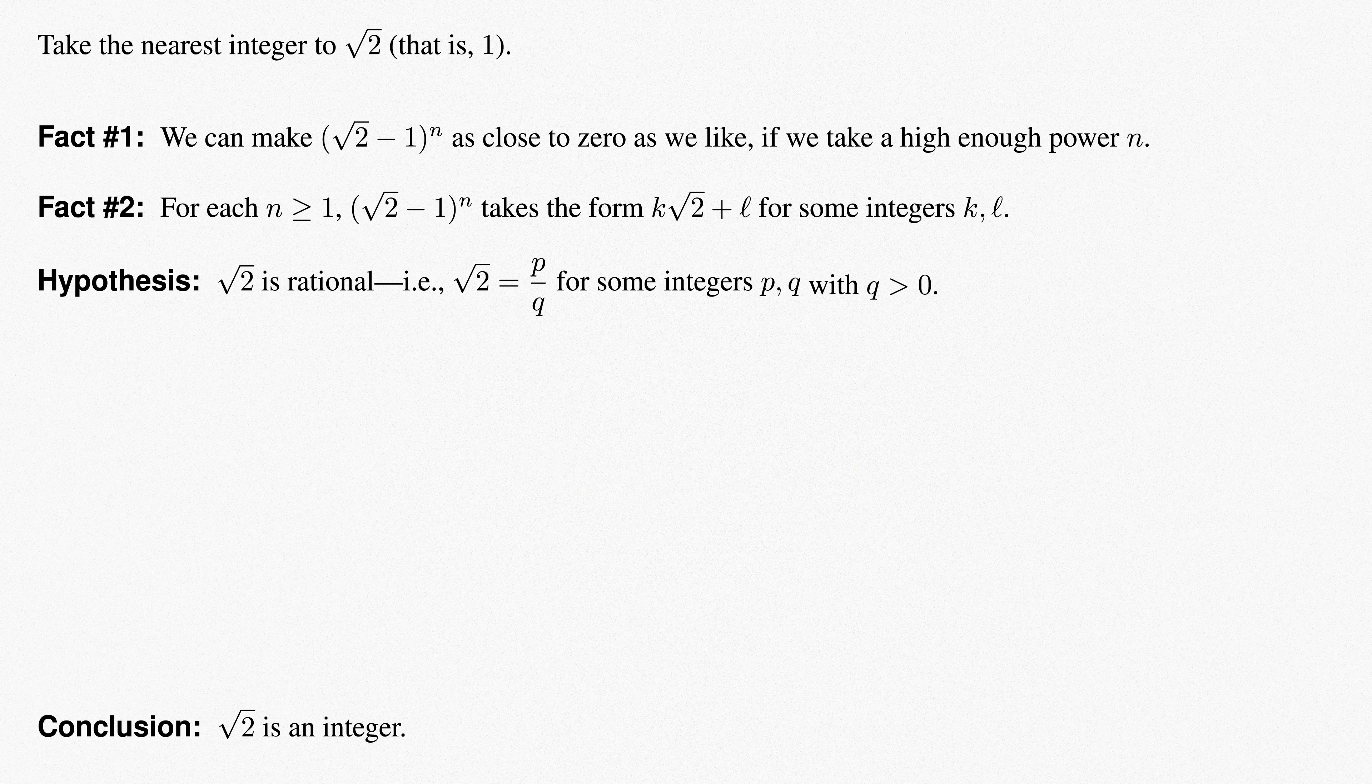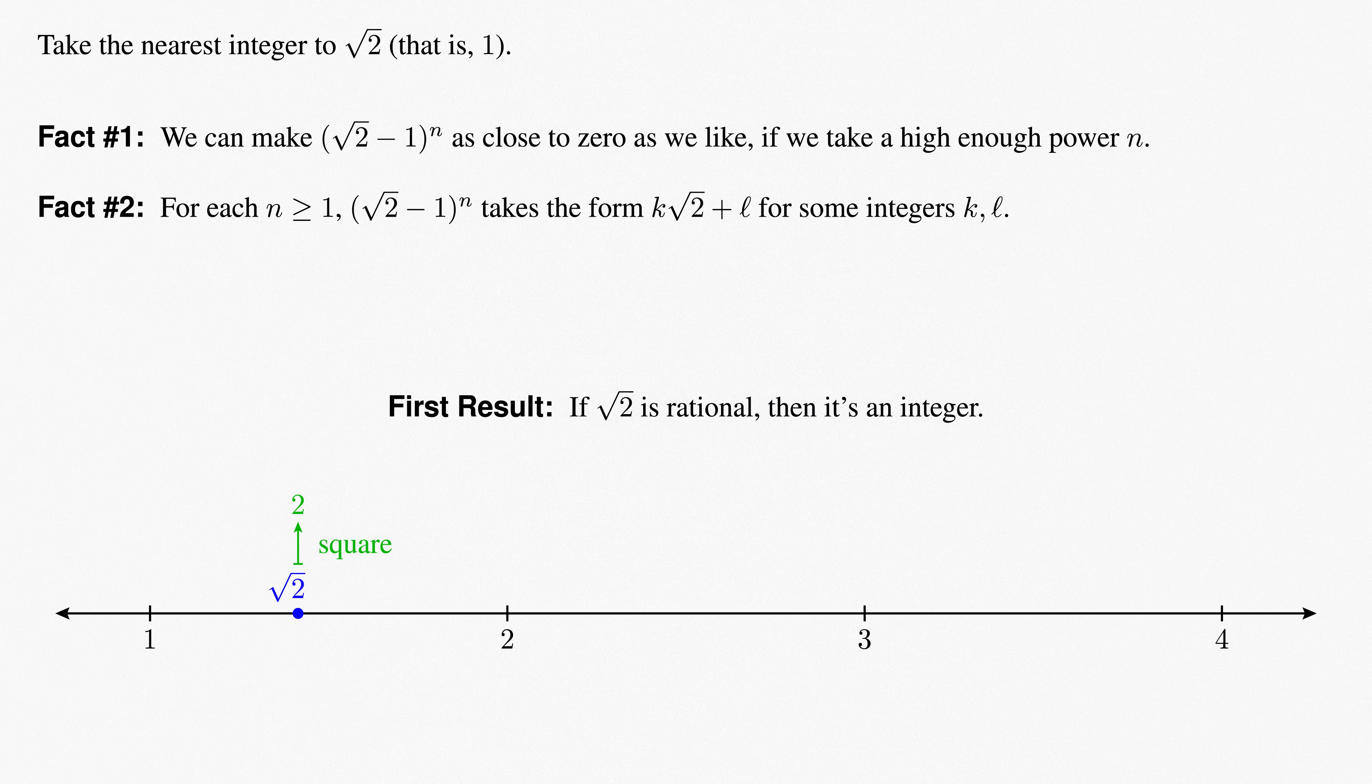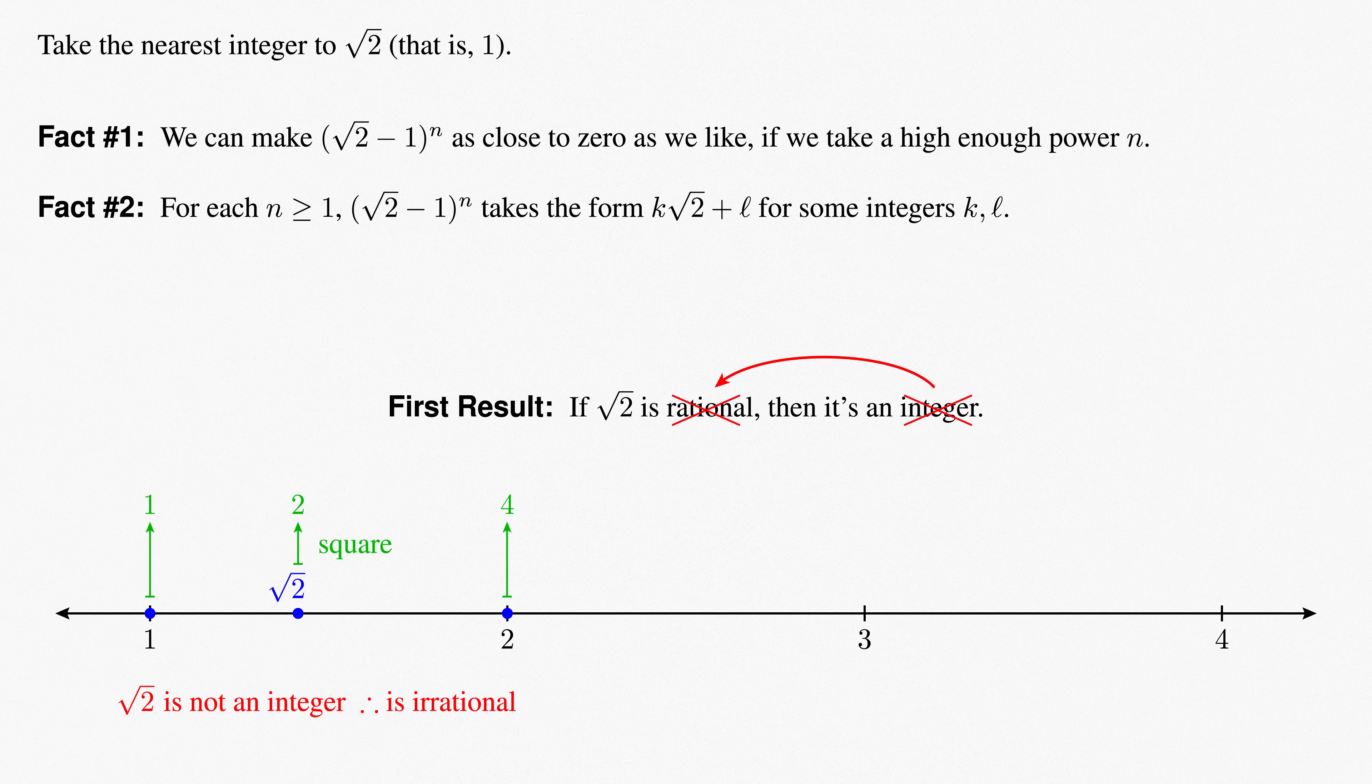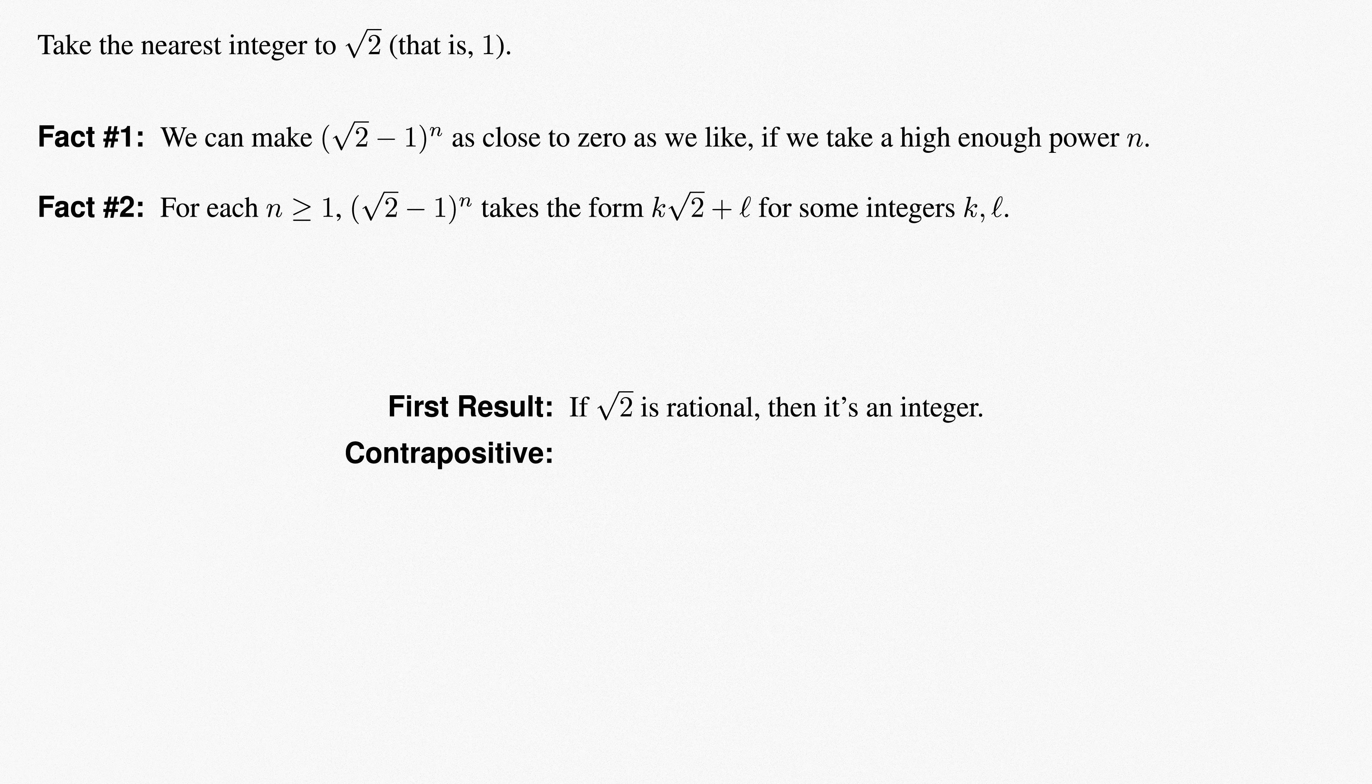Our argument has proven the implication that if root 2 were rational, then it would have to be an integer. But we can very easily check that root 2 is not an integer, because the closest squares of integers can get to the number 2 are 1 squared, which is 1, which is less than 2, and 2 squared, which is 4, which is greater than 2. Neither of which give 2. Thus, because root 2 is not an integer, root 2 cannot be rational. If it were, we've proven it would need to be an integer, which it isn't. What we're actually using is the contrapositive of our result. If root 2 is not an integer, then it's irrational. This is a more useful way to state our result.